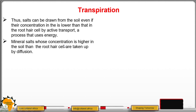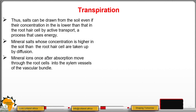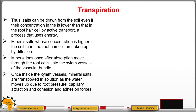Ions taken up by active transport are those which are in less concentration in the soil but higher in the sap of the root hair cell, and they move against a concentration gradient. Once absorbed, mineral ions move through the root hair cells into the xylem vessels of the vascular bundle. Once inside the xylem vessels, mineral salts are transported in solution as water moves up due to root pressure, capillary attraction, and cohesion as well as adhesion forces.